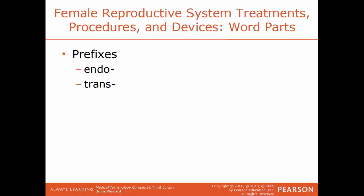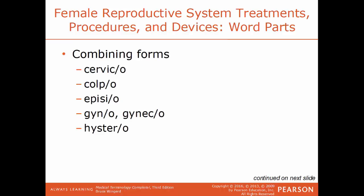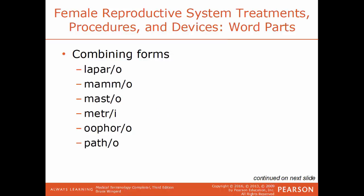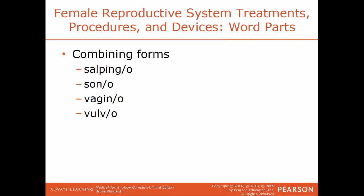Treatments, procedures, and devices of the female system and word parts: prefixes include Endo for inside and Trans for through. Combining forms include Cervico for cervix, Culpo for vagina, Epizio for vulva, Gyno or Gyneco for woman, Hystero for uterus, Laparo for abdominal wall, Mammo and Masto for breast, Metri for uterus, Uforo for ovary, Patho for disease, Salpingo for fallopian tube, Sono for sound, Vagino for vagina, and Vulvo for vulva. Suffixes include Al, Ectomy, Gram, Graphy, Ick, Logist, Logi, Peksi, Plasti, Raphy, Scopi, Stomy, and Tomi.